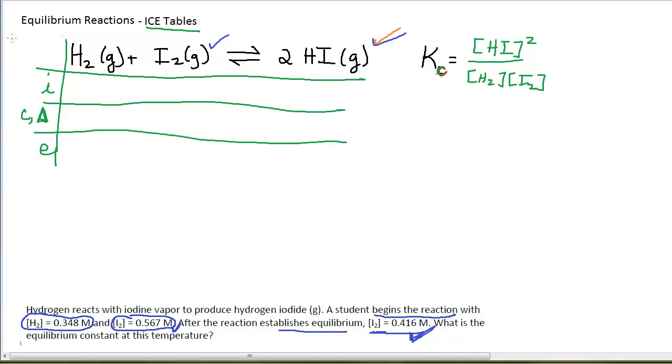We can put moles or molarities in our ICE table. If we're figuring out equilibrium constants, we probably want to be in molarity. And so I like to put the big M over here in the upper left-hand corner to indicate that all the numerical values in this table are molarities.